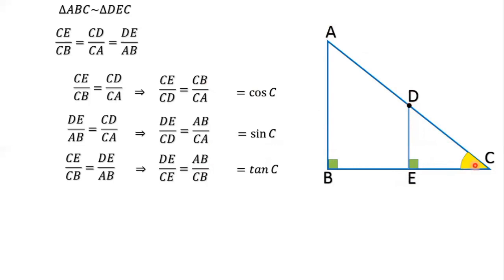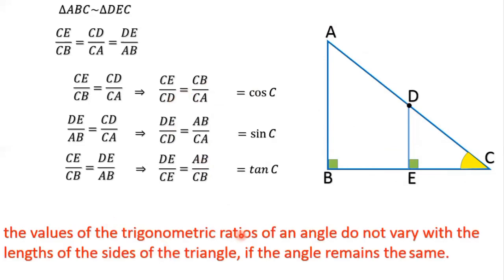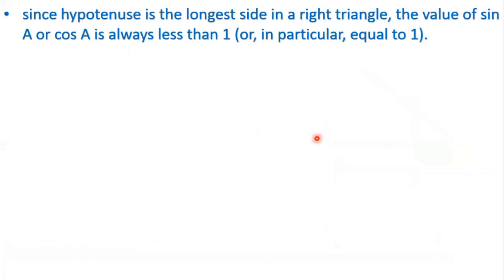So triangle DEC and triangle ABC are two different triangles, but angle C is the same for both. The length of the sides are different, but remember: the values of trigonometric ratios of an angle do not vary with the length of the sides of the triangle if the angle remains the same. Whether the triangle is bigger or smaller, trigonometric ratios remain the same. Trigonometric ratios do not depend on the length of the sides — they depend on the angle.